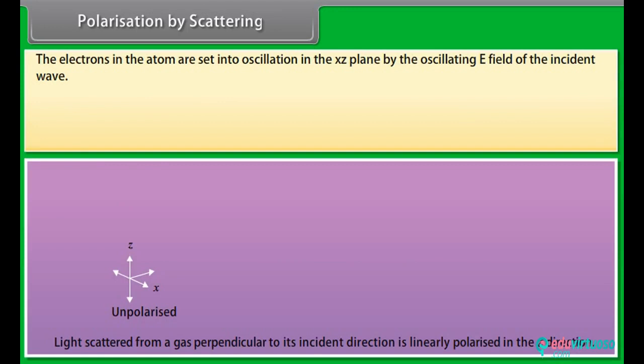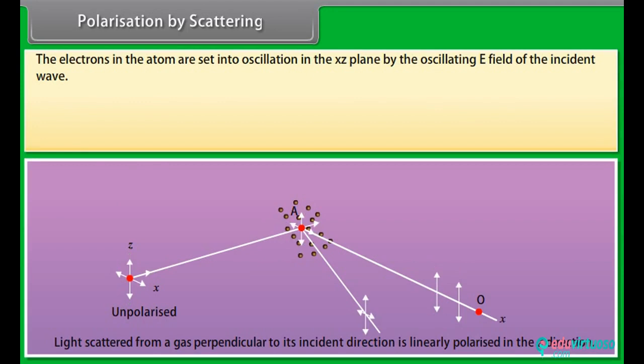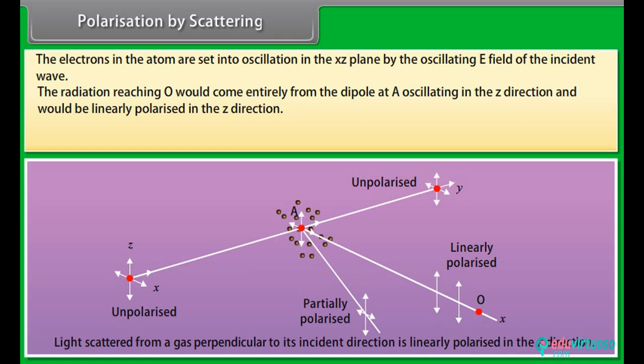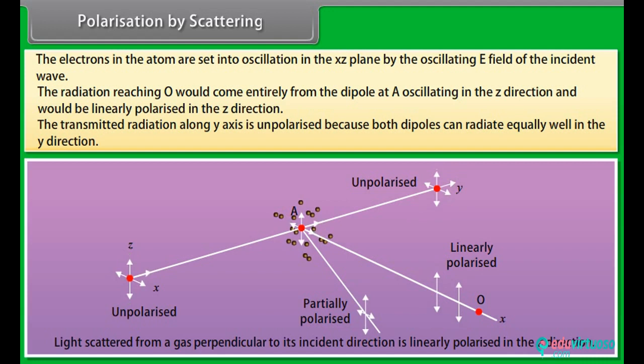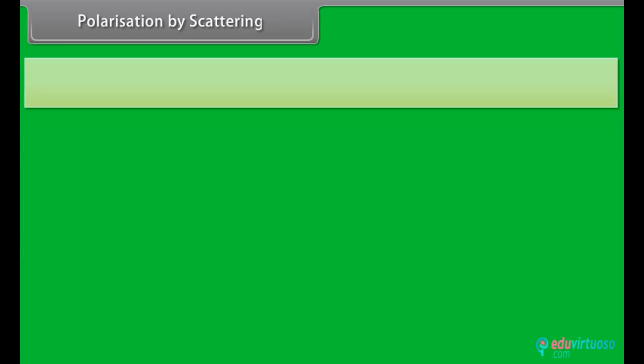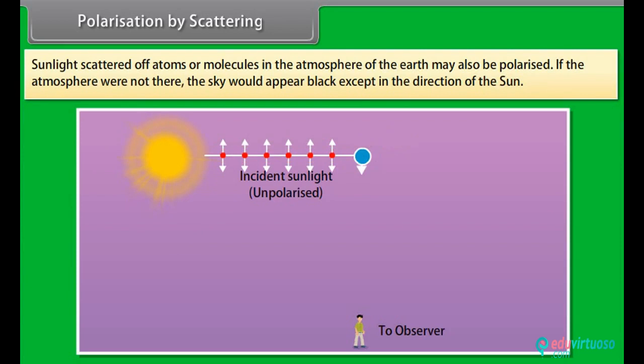Polarization by scattering: consider unpolarized light traveling along the y-axis striking a gas atom at A. The electrons in the atom are set into oscillation in the x-z plane by the oscillating electric field. The radiation reaching O comes from the dipole oscillating in the z direction and is linearly polarized in the z direction. The transmitted radiation along the y-axis is unpolarized because both dipoles radiate equally well in the y direction. Sunlight scattered by atoms or molecules in the atmosphere may also be polarized.